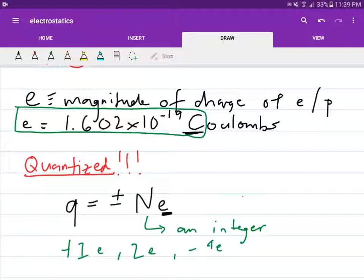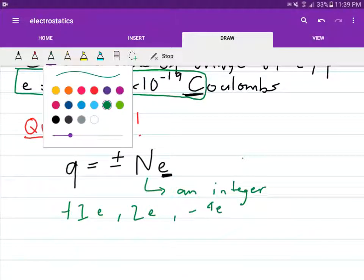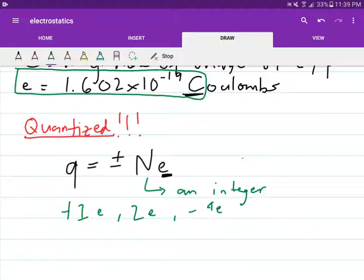So meaning you can only have plus 1e, plus 2e, minus 4e. You cannot observe charges or measure charges in nature that are, not zero, you cannot observe charges that are 1.7e, 4.3e. Any fractional charge does not exist. So this is a very bizarre quantity of charges.